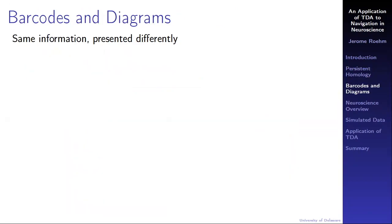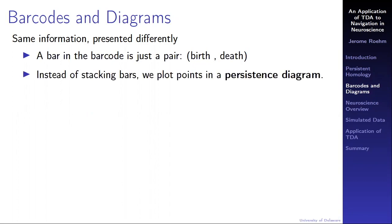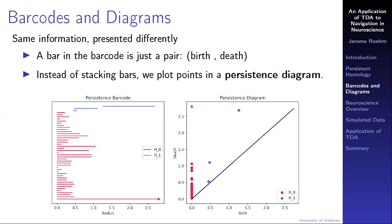Presenting the persistence information as a barcode is great, as long as there's not too many bars. If the point cloud was bigger and we wanted to display thousands of bars, the barcode would get a bit crowded and hard to read. We can reorganize into a persistence diagram. A bar in a barcode is nothing more than an ordered pair, recording the birth time and the death time. The bar starts at the birth time and ends at the death time. Instead of stacking bars, we can plot the points on a 2D plane to form a persistence diagram. This is the same information, just presented a bit differently. The long bar in the barcode is born a little after 1 and persists until its death a little after 2.5. The point in this diagram corresponds with that bar.